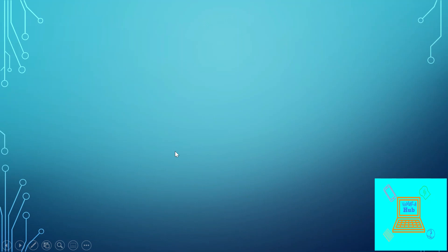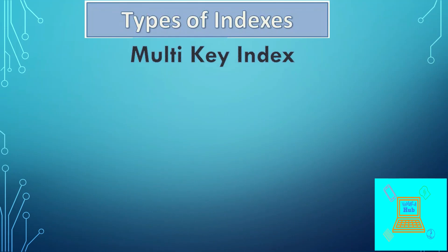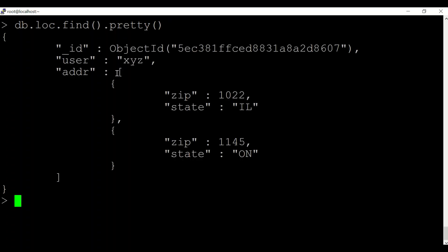Now let us look at different types of indexes in MongoDB. Other than single and compound indexes, the other types include multi-key index. A multi-key index is basically an index on an array value in a document of a collection. For example, if I have a collection with documents containing a field 'addr' with sub-fields 'zip' and 'state', I can create a multi-key index on addr.zip like this.